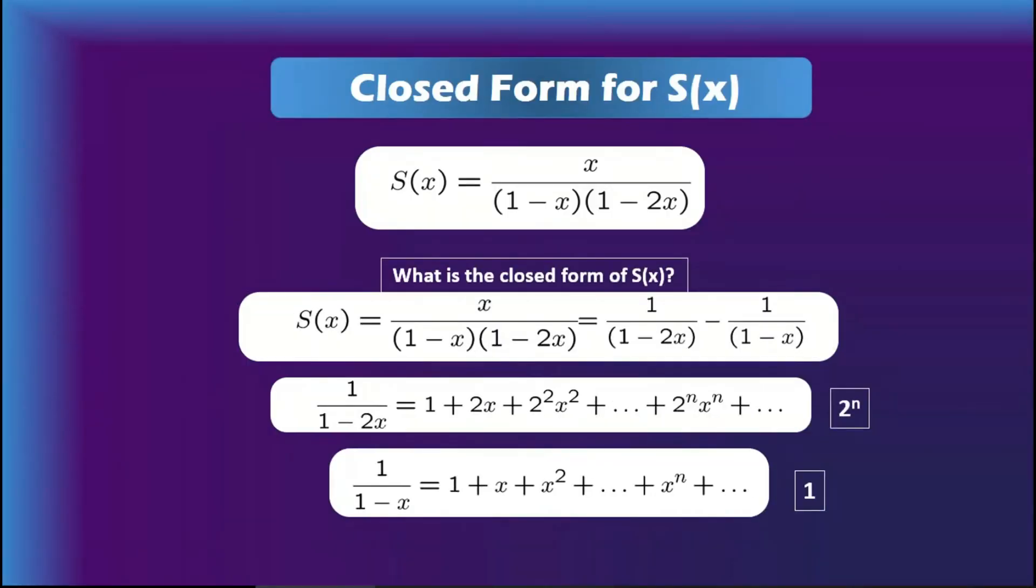Next target is to find the closed form of S(x). By simplifying this function, we can just write 1/(1-2x) minus 1/(1-x). In order to find the closed form, we need to find the coefficients of x to the power n for these both terms. If we calculate it, 1/(1-2x) will give 2 to the power n, and 1/(1-x) will give 1. From that we can easily say the closed form will be s_n equals 2^n minus 1.